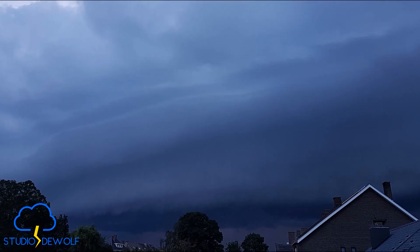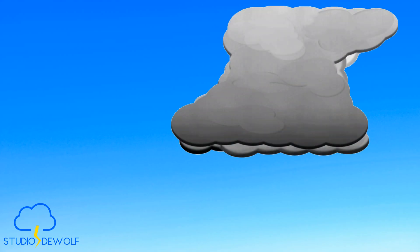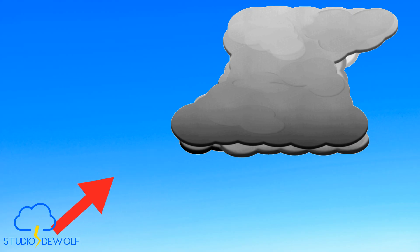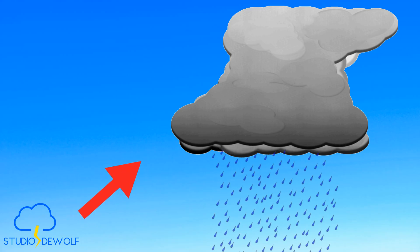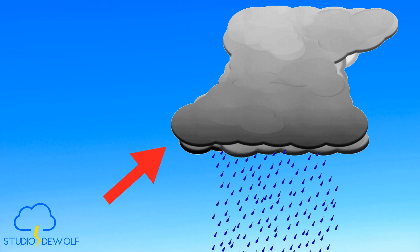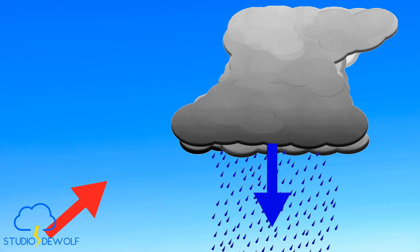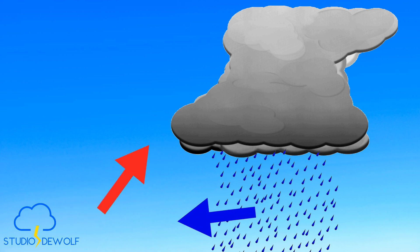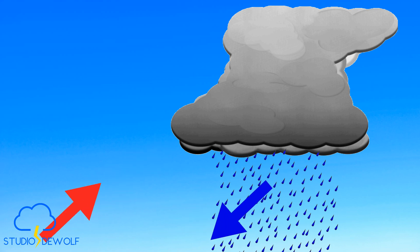But how does such an awe-inspiring sight come to be? The secret lies in the dynamics of the thunderstorm itself. As warm, moist air is drawn upward into the storm, it cools and falls back down as rain. This descending precipitation drags cooler air with it — known as the downdraft.